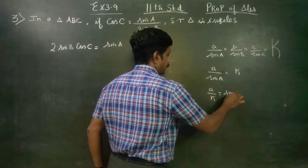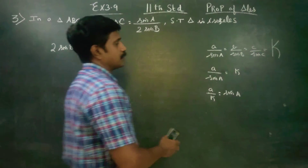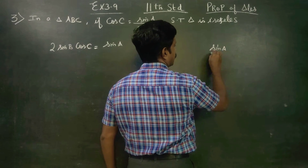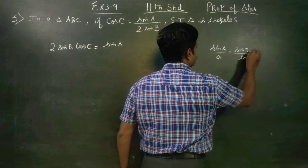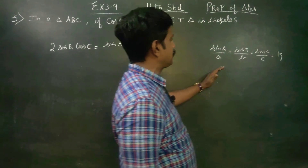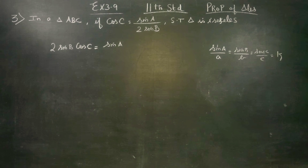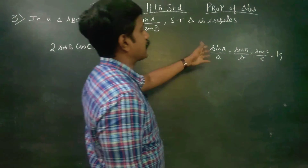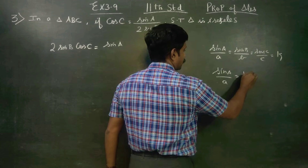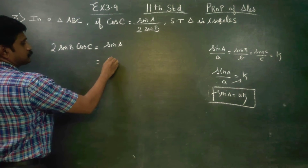A by K is equal to sin A. This is one way of representing: sin A by A is equal to sin B by B is equal to sin C by C is equal to K. So K cross multiplied gives sin A is equal to A·K.